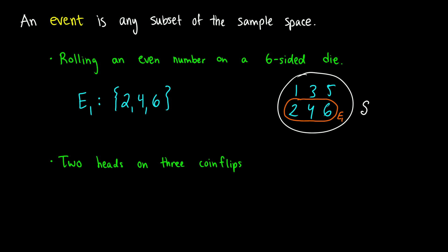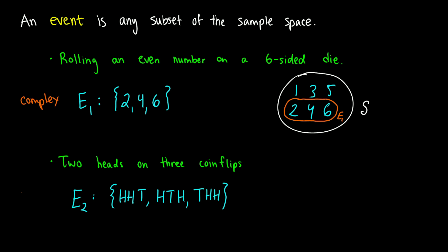What if we have another event — two heads on three coin flips? If we have two heads that means we have one tail. So maybe we get the two heads first and the tail last, or a tail in the middle of two heads, or the tail comes first and the two heads come after. Those are the only three outcomes where you get two heads on three coin flips. Since these events have more than one possible outcome, we call them complex events.